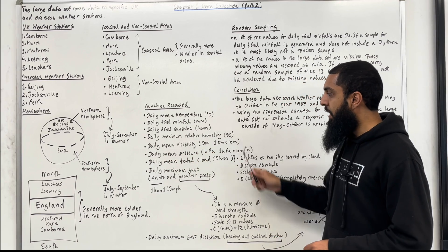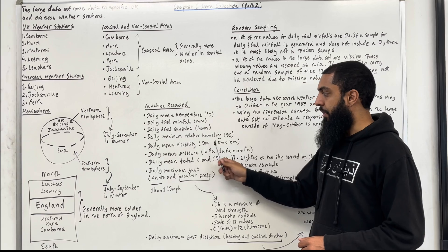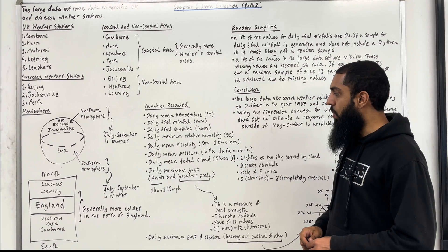Daily maximum relative humidity in percentage. Daily mean visibility in decimetres. One decimetre is equal to 10 metres.